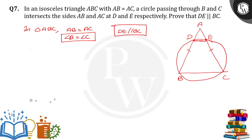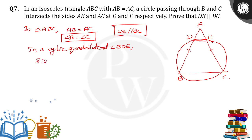Now see here — in a cyclic quadrilateral BCDE. In cyclic quadrilateral BCDE, side ED is produced to A and side BD is produced to A. You can observe that BD is extended up to E.